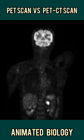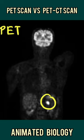PET scan is a very useful scan in identifying the tumor in the body. In this PET image, or positron emission tomography image, you can easily see the tumor. However, one main problem is that the resolution of this image is so low that you cannot identify the proper anatomical structure where the tumor is.